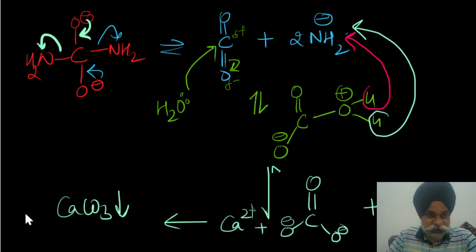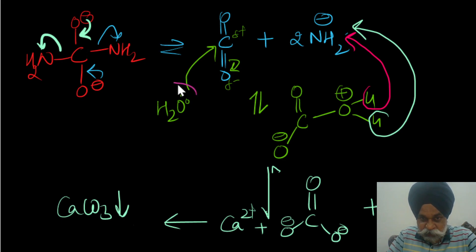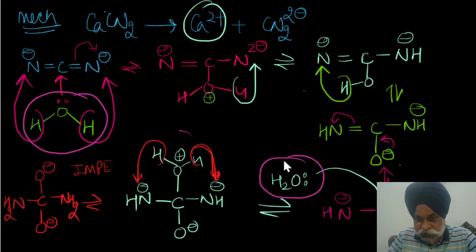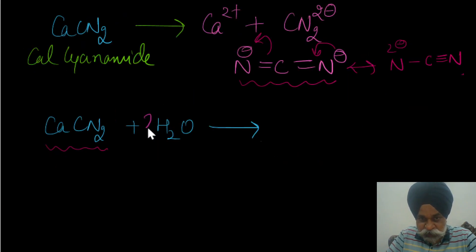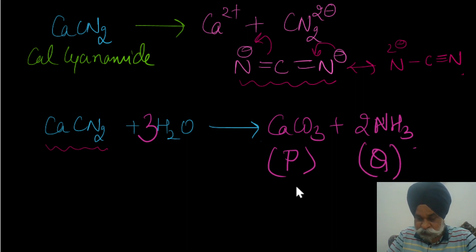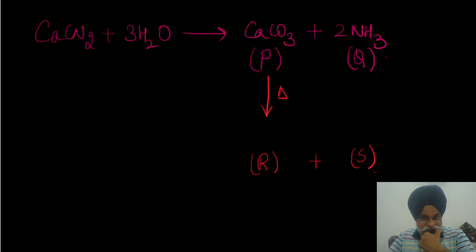In total, how many water molecules were used? Marking them: one water here, another here, and a third one here — so three moles of water were used in total. The overall reaction gives calcium carbonate and two moles of ammonia. These are identified as P (calcium carbonate, precipitate) and Q (ammonia, gas).